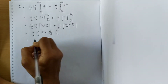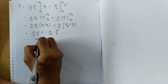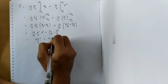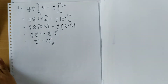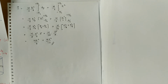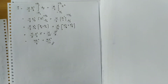Canceling L, we get MR²/4 + ML²/12. This is the moment of inertia of the solid cylinder about an axis which passes through its center of mass and is perpendicular to the length.